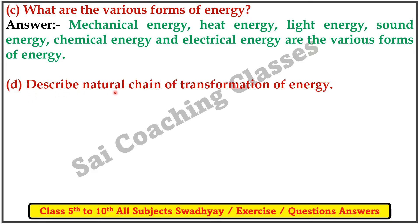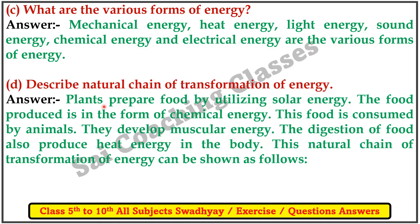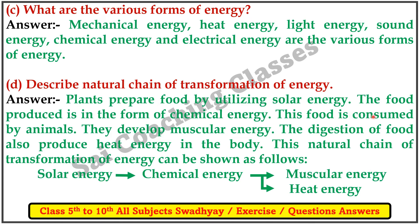D: describe the natural chain of transformation of energy. Answer: plants prepare food by utilizing solar energy; the food produced is in the form of chemical energy. This food is consumed by animals and they develop muscular energy. The digestion of food also produces heat energy in the body. This natural transformation of energy can be shown as: solar energy → chemical energy → muscular energy or heat energy.